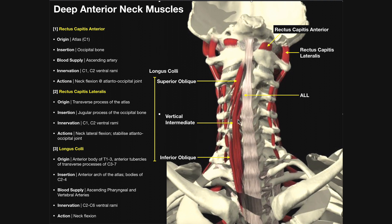The first thing we can see is the anterior longitudinal ligament, or ALL. That's this thick, broad ligamentous sheet that goes all the way down from the foramen magnum over the anterior surface of the bodies of all these vertebrae, and it will actually extend all the way down to the sacrum.